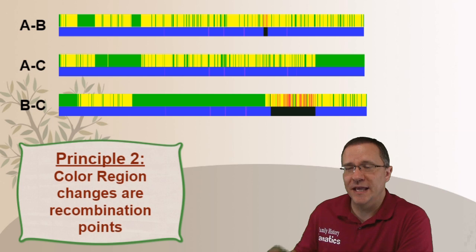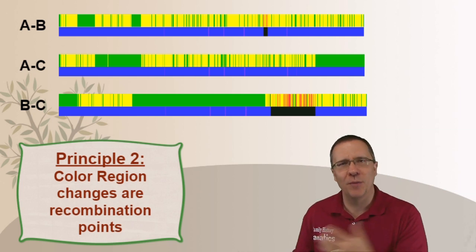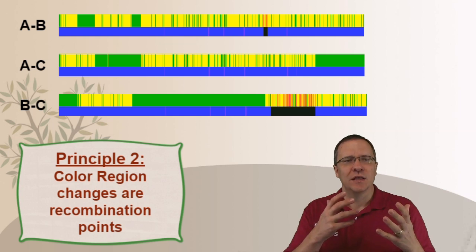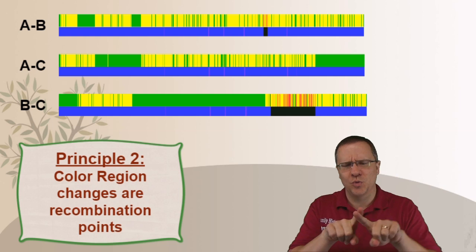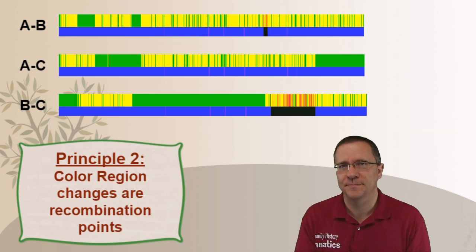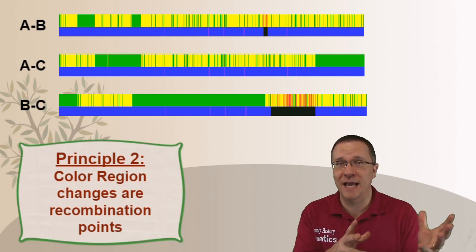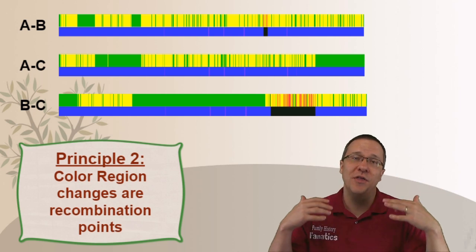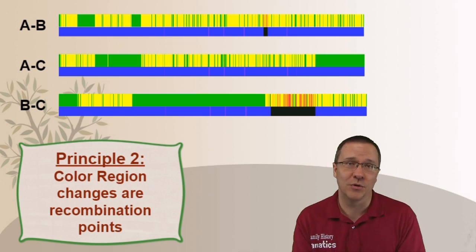Now the second principle that we can learn from this is that the color region changes represent recombination points. Now recombination happens when the cells are dividing before they're being passed on. And these are the egg and the sperm cells. And as part of that the two chromosomes swap different places so that what's passed on is actually a recombination of that chromosome. It is a combination of the two parental chromosomes. Now sometimes this doesn't happen at all and you receive a full chromosome. Other times it might happen a lot and you receive a really jumbled up chromosome from your mother or your father.